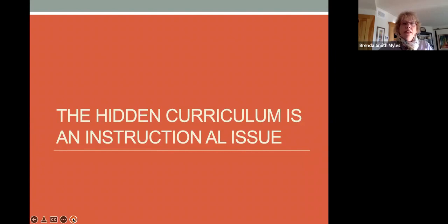Now I've shared with you some examples of the hidden curriculum and the hidden curriculum is an instructional issue. Neurologically, autistic people often have difficulty learning information that neurotypical people pick up by themselves, unwritten rules. And because they have this neurologically based challenge, we need to teach the hidden curriculum. We need to unhide it for our autistic students.